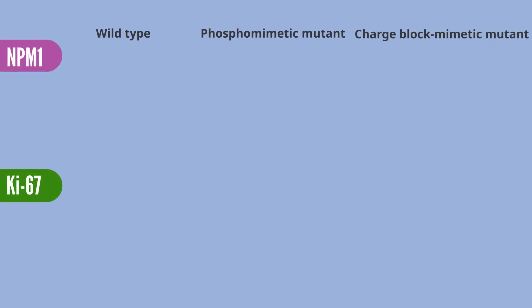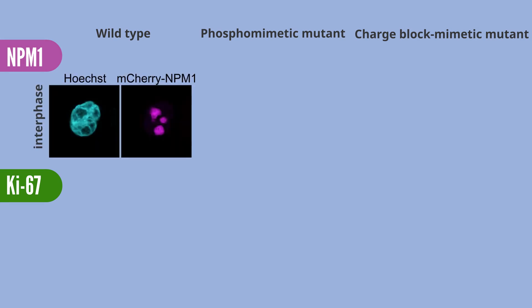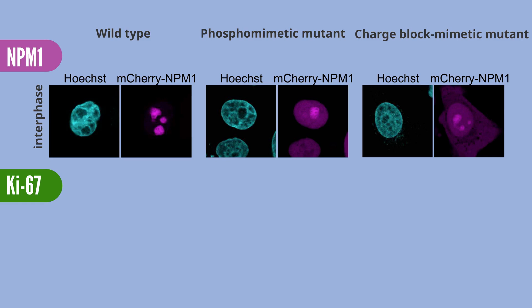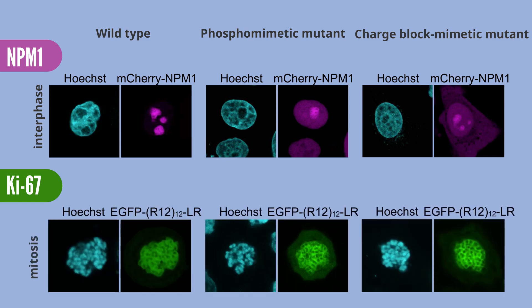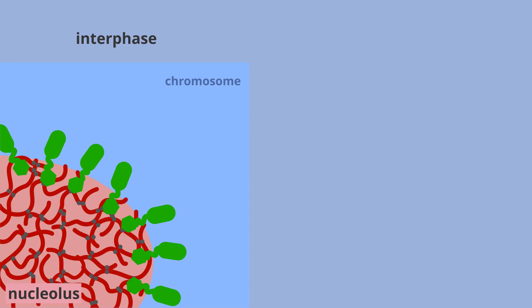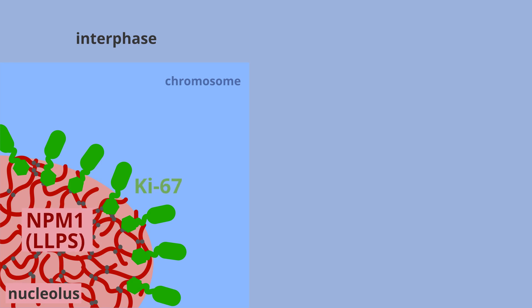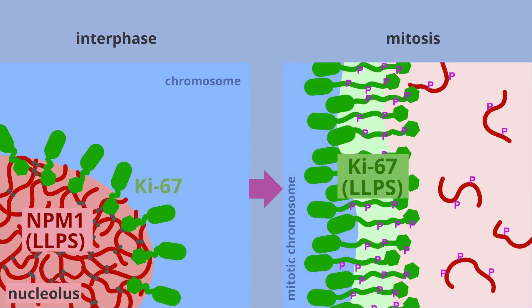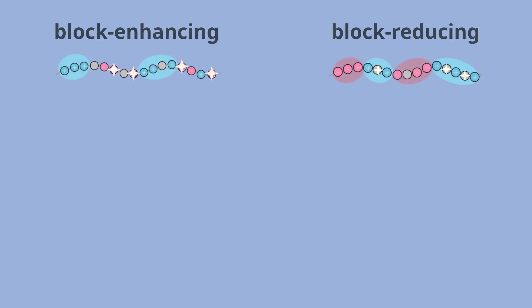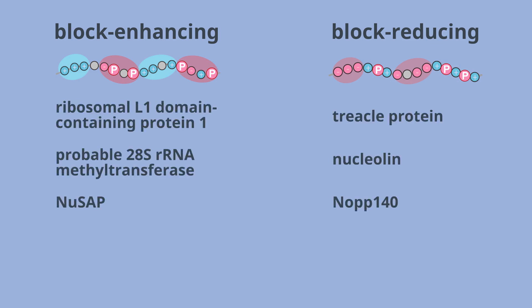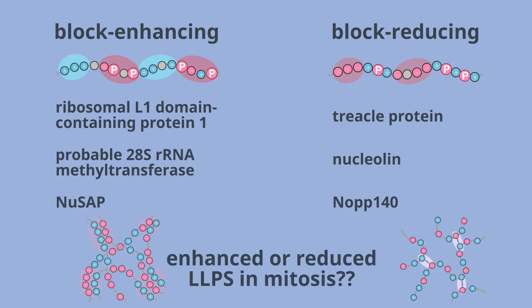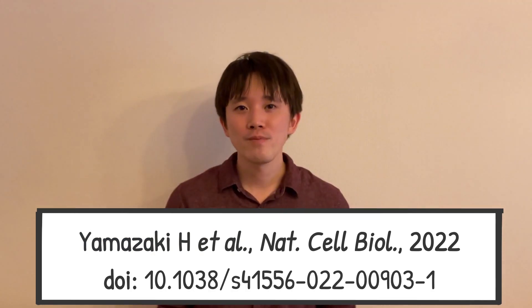We also demonstrated that these phosphorylation-dependent regulations of LLPS propensity are tightly correlated to the dissolution of nucleoli in the case of NPM1, and the formation of chromosome periphery in the case of Ki67. In summary, the results obtained from two nuclear phosphoproteins, NPM1 and Ki67, demonstrated a new and fundamental mechanism of how protein phosphorylation regulates LLPS when the cell enters mitosis. Our phosphoproteomic analyses also showed that mitotic hyperphosphorylation enhances or reduces the charge-blockiness of other nuclear proteins, suggesting they are involved in the assembly and dissolution of nucleoli during mitosis. The detailed data are presented in this paper, and we hope it is of interest to you.